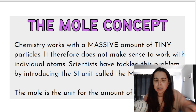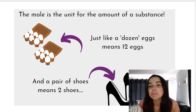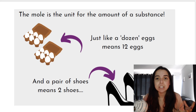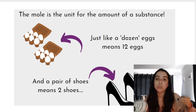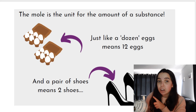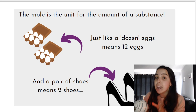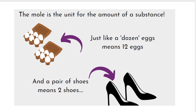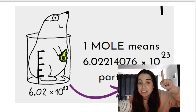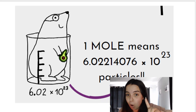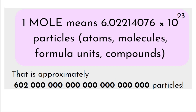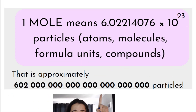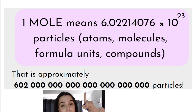Moles are still confusing — think of it like this. If you're baking and the recipe says you need a dozen eggs, that means you need 12 eggs. Instead of saying 12, we use the word dozen. Instead of saying I need two shoes, we say I need a pair of shoes — a pair means two. So just like a dozen means 12 and a pair means two, a mole means 6.022 times 10 to the 23 particles. If I say I have one mole, it means I have that many particles. That is a huge amount of particles — that number of particles is one mole.